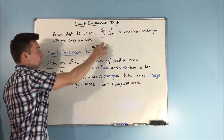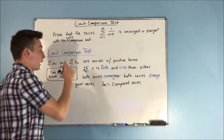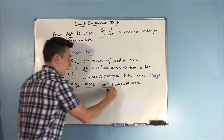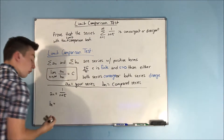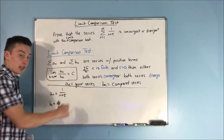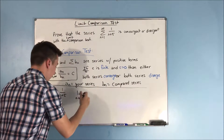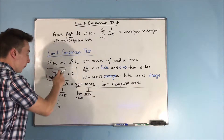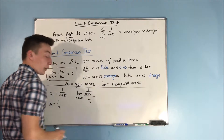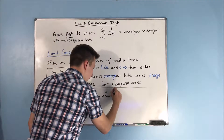Now we can get into solving this problem with the limit comparison test. So a sub n equals 1 over n plus 5, and b sub n — the compared series — is going to be 1 over n. It's very close to 1 over n plus 5; you just take out that constant. So now we set up the limit as n approaches infinity of (1 over n plus 5) divided by (1 over n). If we flip this, then n goes to the top, and we end up with the limit as n approaches infinity of n over n plus 5.